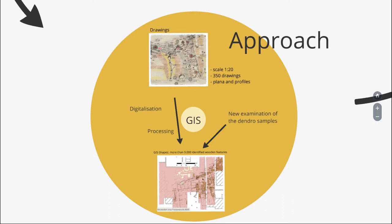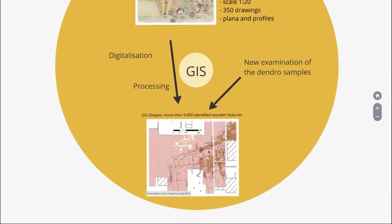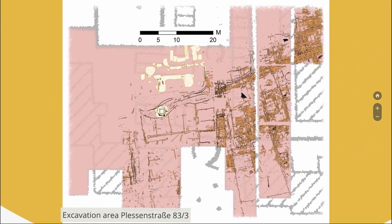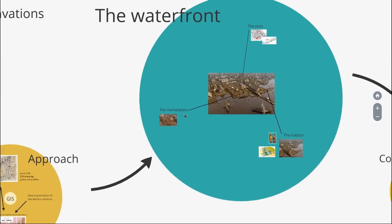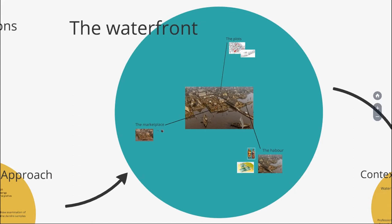There were at least 500 dendrochronological dates on approximately 9,000 identified wooden features. This resulted in a GIS project with the 9,000 features connected across an access database, and we could also see the application of a 3D model. This was the basis for my interpretation, and now I'm going to review the major results.